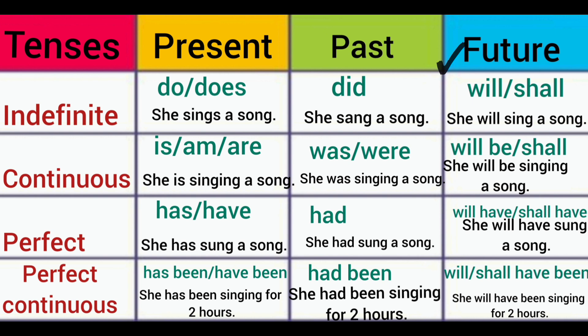For future tense, helping verbs are will and shall. She will sing a song, she will not sing a song, or will she sing a song? Now moving on to the continuous aspect.